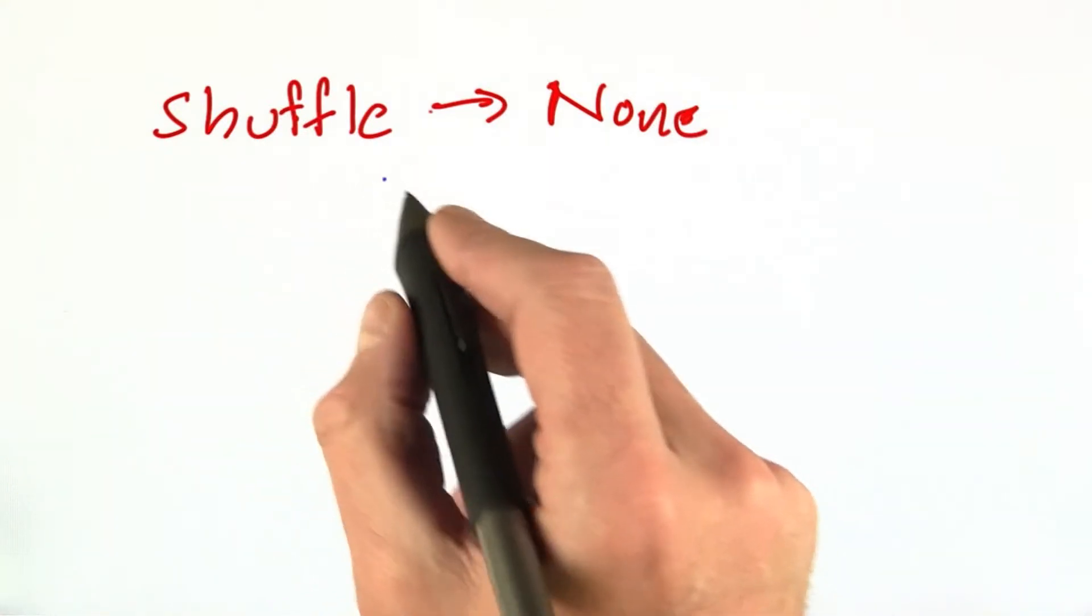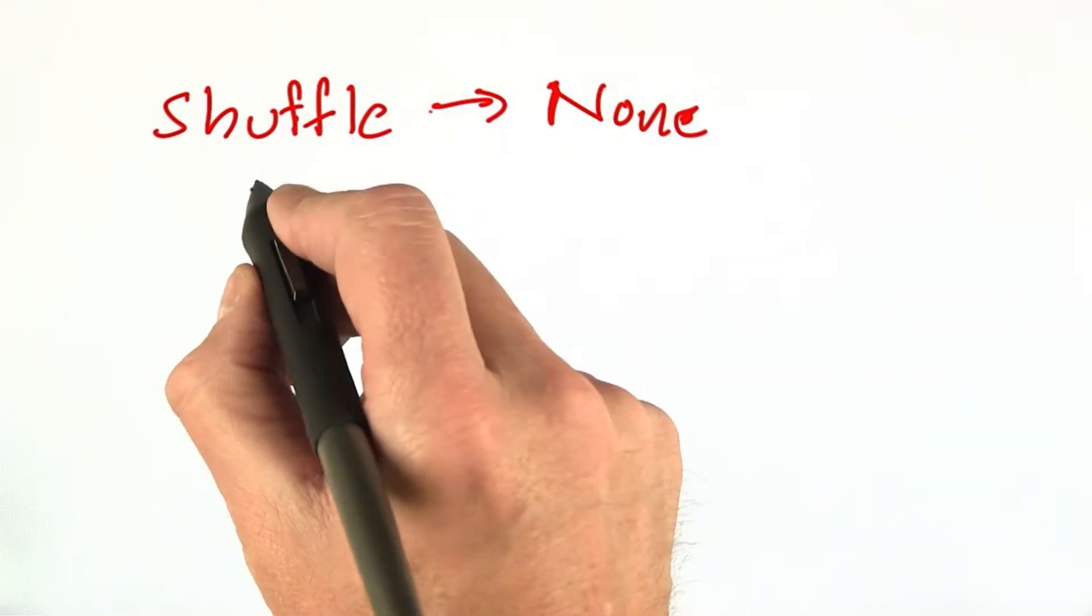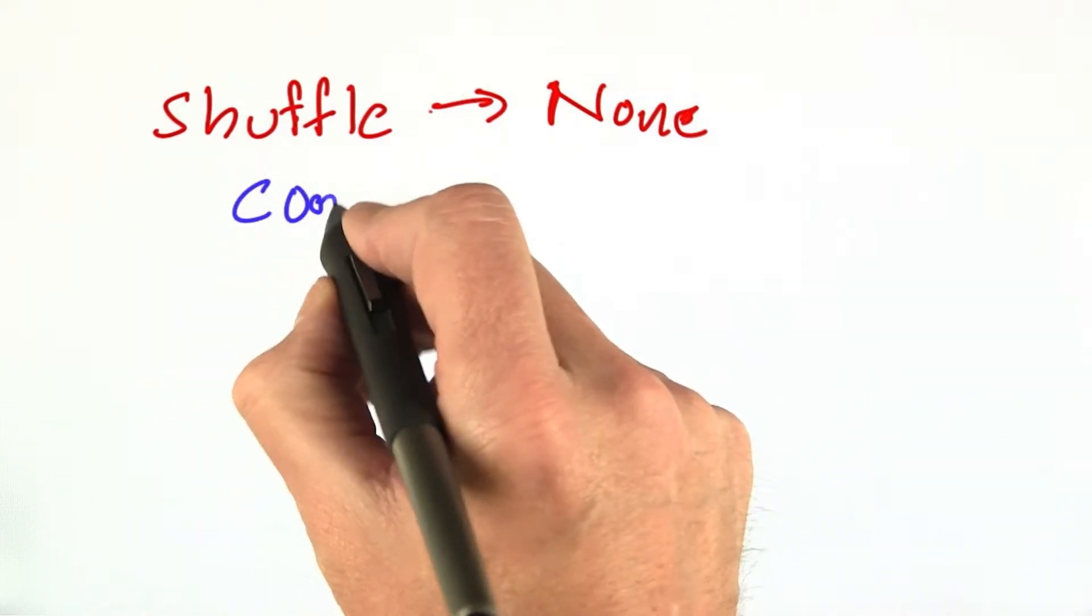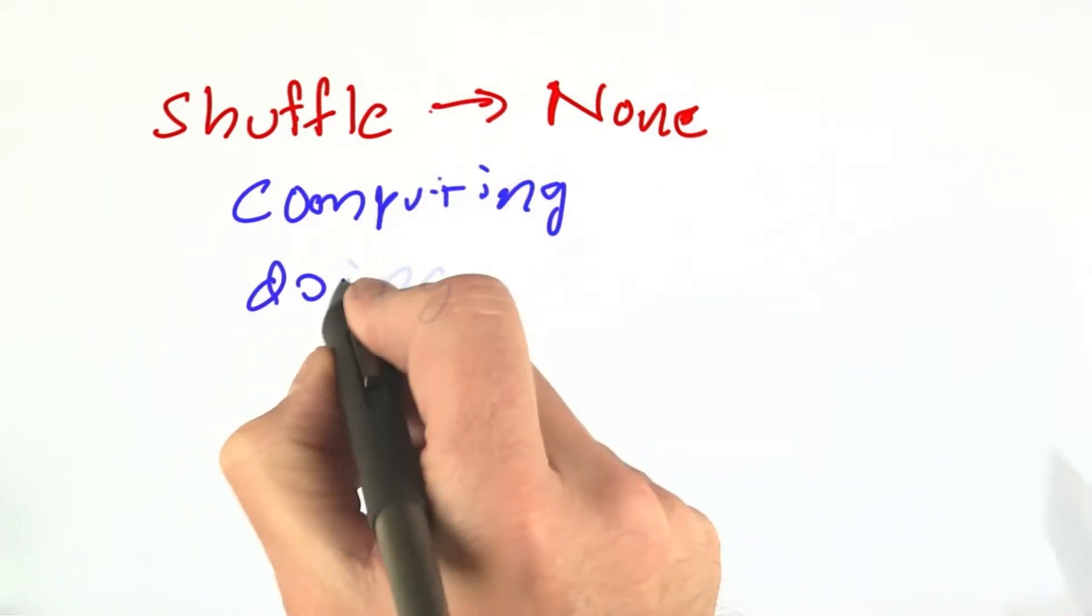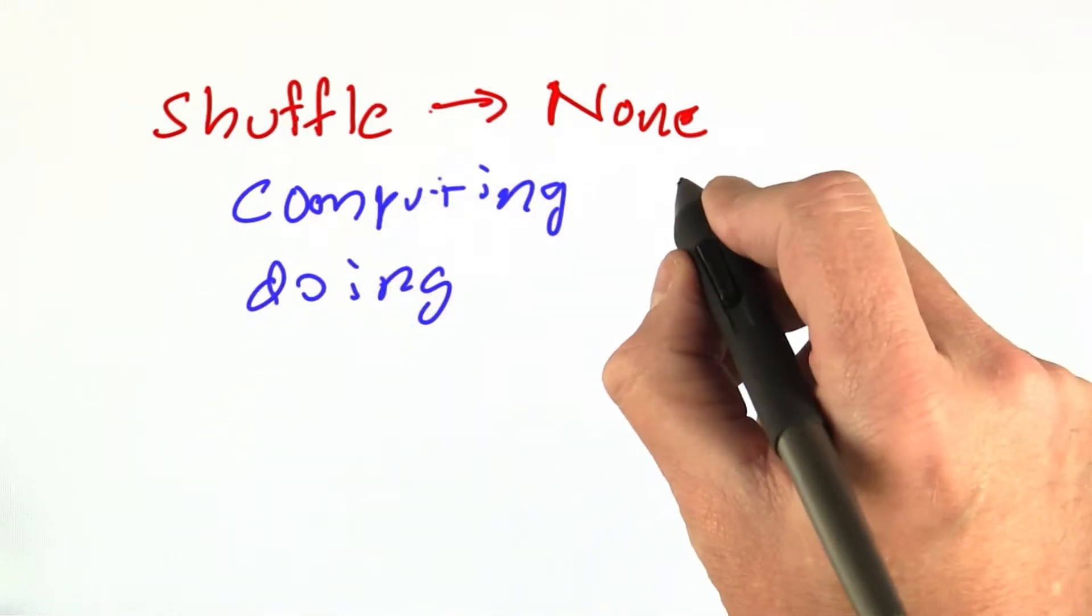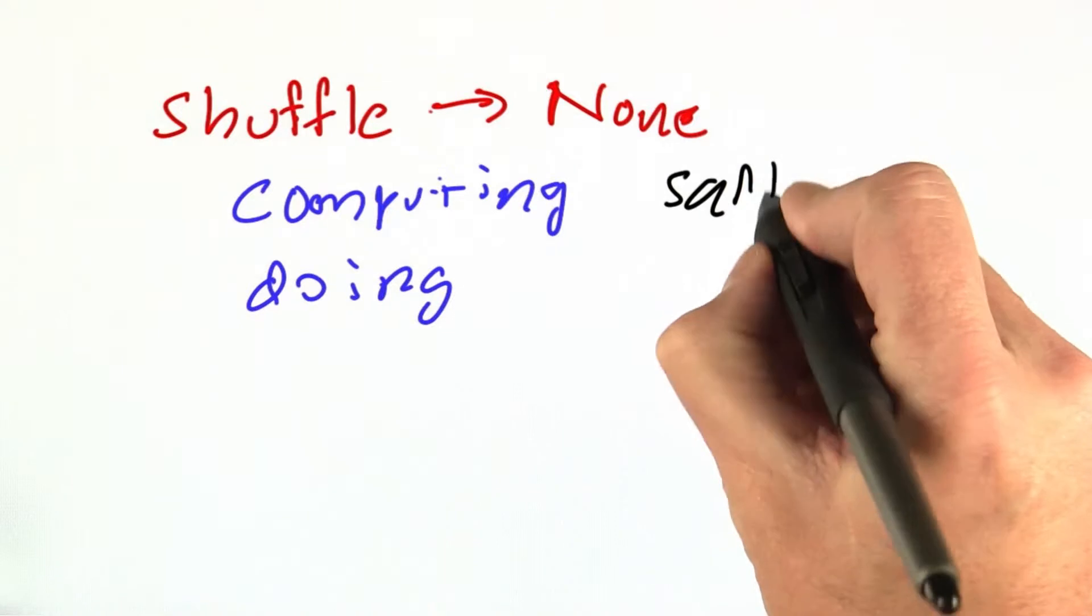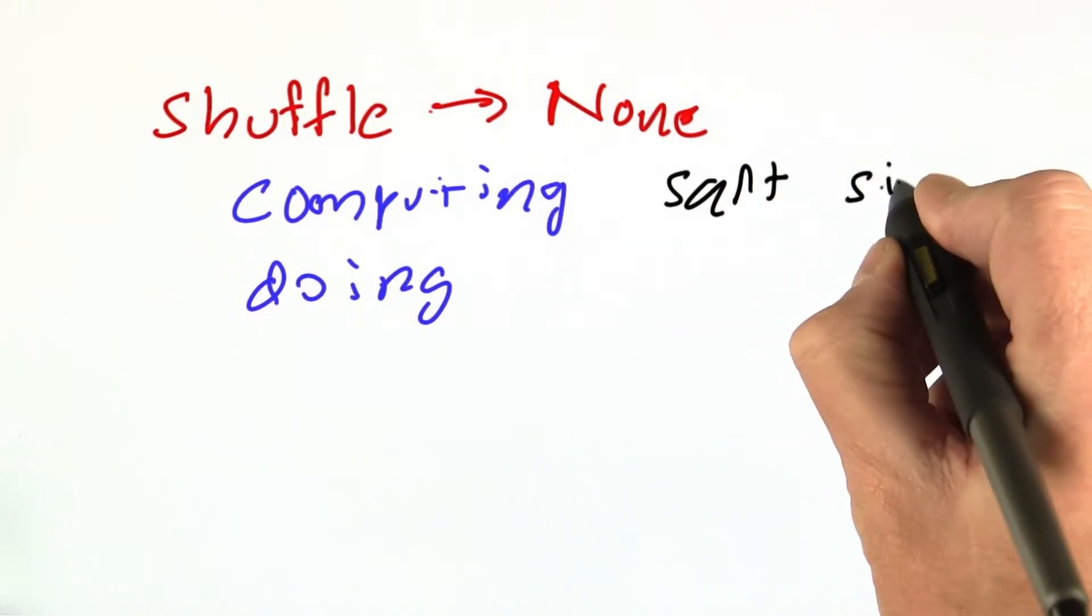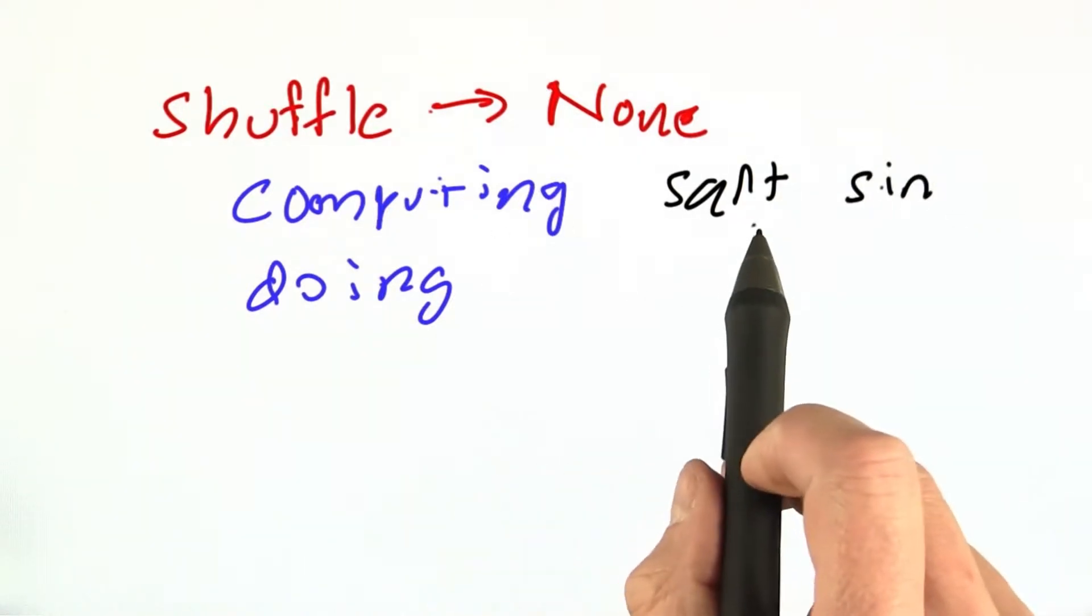There's this eternal tension in programming between computing a result and doing something. Functions like square root and sine take an input and return a result.